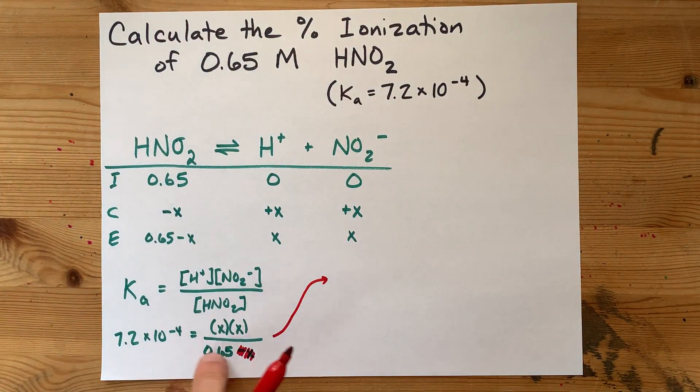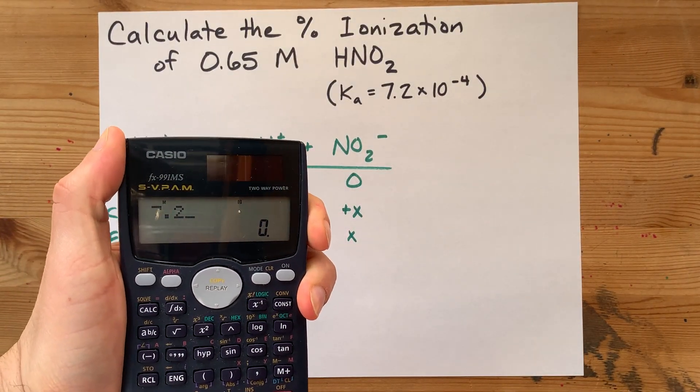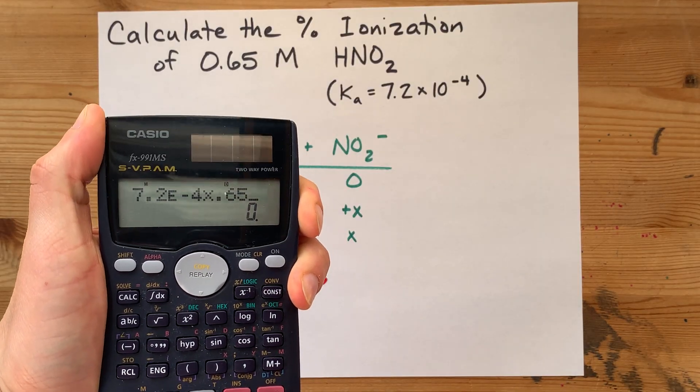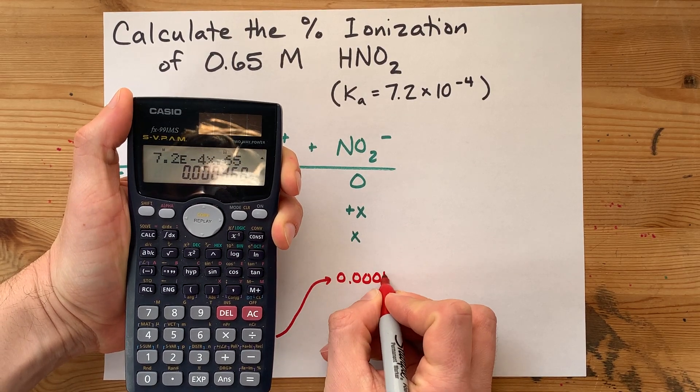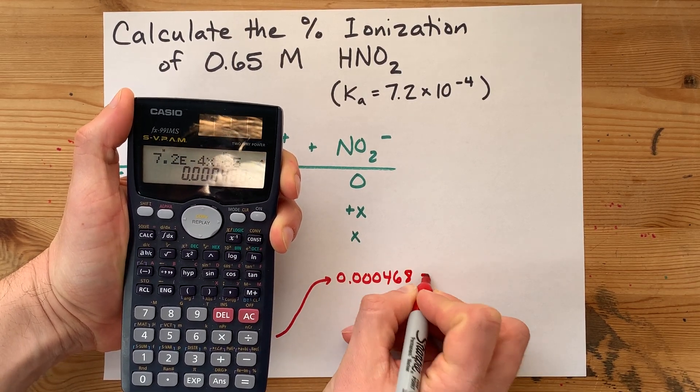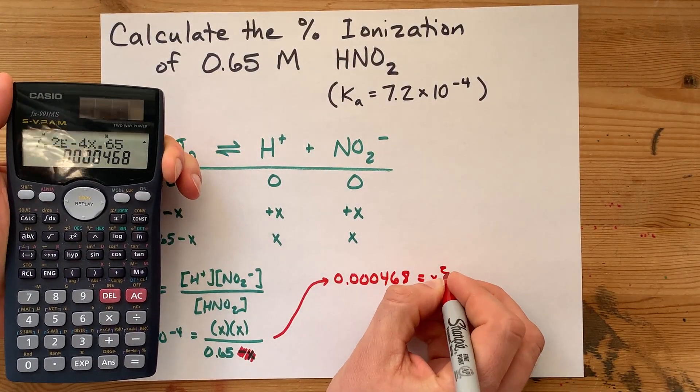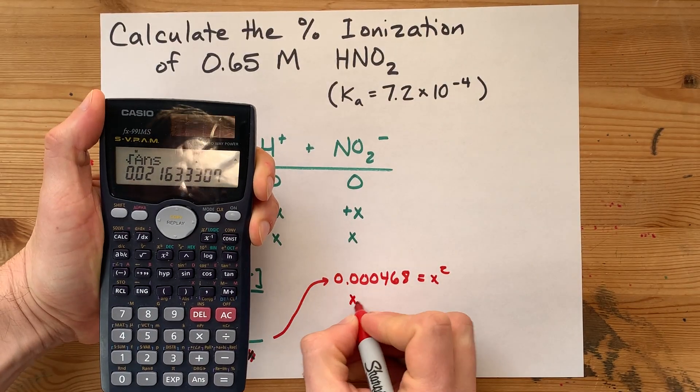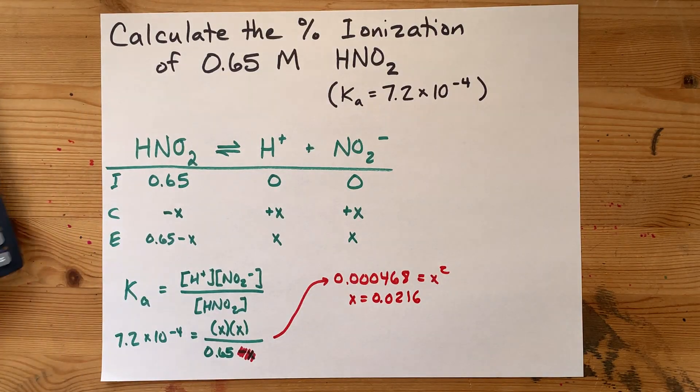Now, in order to solve this equation, you have to undo dividing by 0.65. So, take your 7.2 times 10 to the negative 4 and times it by 0.65. I get 0.000468 equals X squared. And when I square root that answer, I get X is 0.0216.